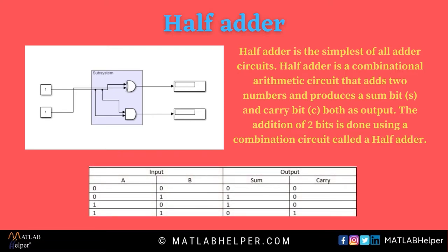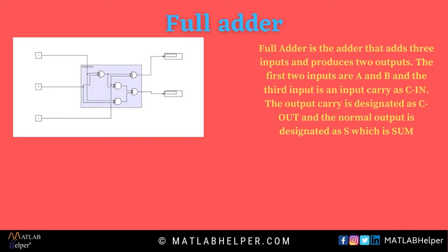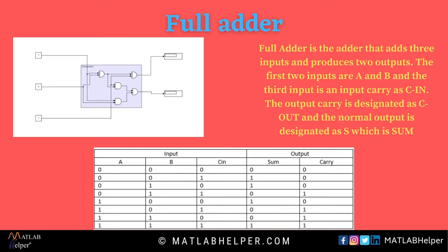Following is the truth table for the half adder circuit. The full adder circuit uses the same principle as the half adder, but it is expanded and returns two output values of sum and carry when given three inputs. Following is the truth table for a full adder circuit. You can read more about half adder and full adder circuits on our webpage — the link is provided in the description.